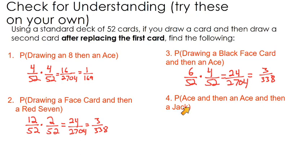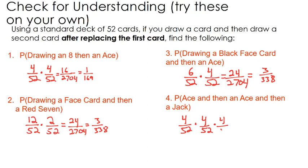Last question: the probability of drawing an ace, then an ace, then a jack. You draw your first ace — four out of 52 — then replace it, so your second draw has the same odds: four out of 52 for another ace. Then replace it again, and your third draw for the jack is also four out of 52. When you multiply straight across you get 64 in the numerator and 140,608 in the denominator, which simplifies to one over 2197. You can throw these into a calculator to get decimals or percents.